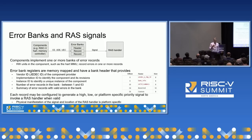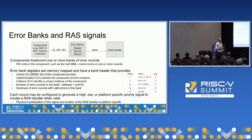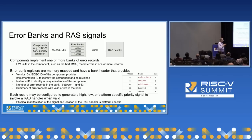The error bank header has information identifying the nature of the associated component and indicates how many records are in that bank. Each error record can log a complete set of information about the occurrence of an error. RARI also provides standardized support for configuring on a per-record basis how the occurrence of a logged error gets signaled to system software, allowing distinctions in terms of severity or priority.